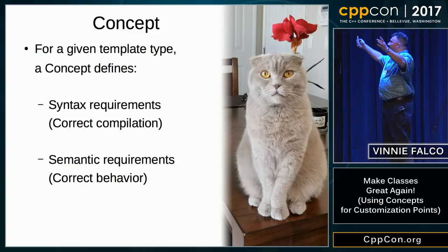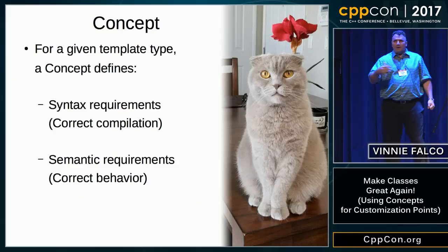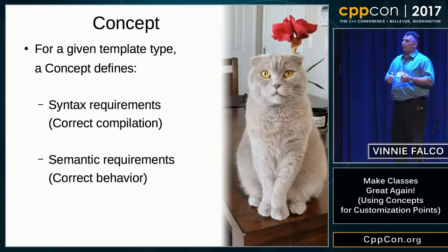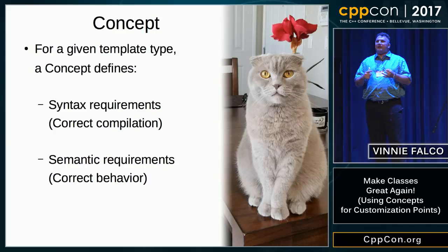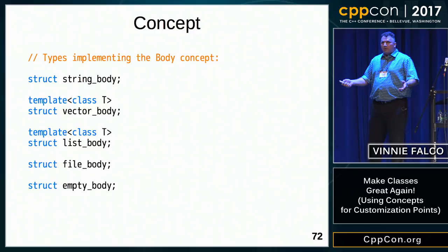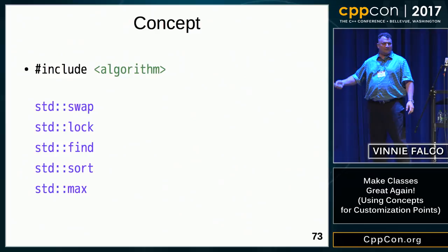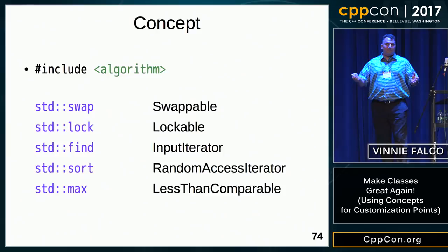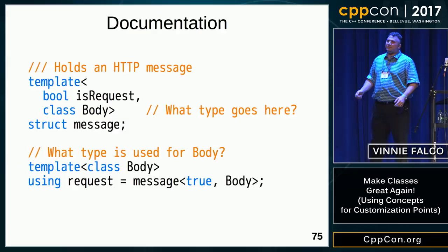We've just created a concept — Body is a concept. A concept defines the syntactic requirements (what's necessary for correct compilation) as well as semantic requirements (what's needed for correct runtime behavior). All the types we've created — string_body, vector_body, list_body, file_body, empty_body — are instances of the Body concept. Everyone here has already been using concepts: when you call find or sort from the standard library, the objects you pass meet requirements like InputIterator or LessThanComparable.